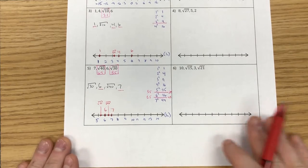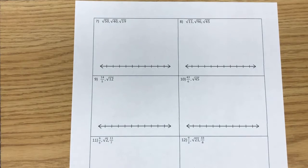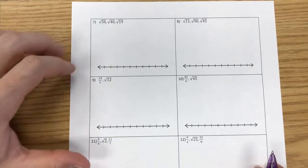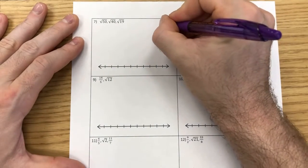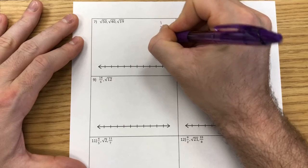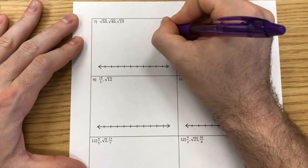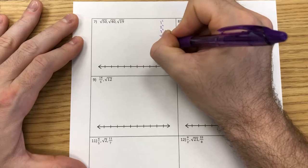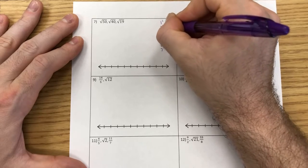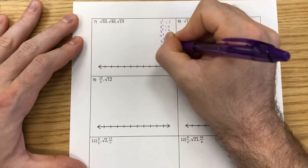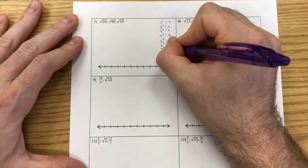Let's do one more — a harder one with nothing but roots. We list our squared tables: 1, 4, 9, 16, 25, 36, 49. That will hit 19 and 40, but 50 is still beyond that, so I'll include 8 squared as well. I scan my table for 19 — I pass it, which means it's somewhere between two consecutive squared values. Same thing with 40 — I pass it, so it's between those two. And 50 is between the next set.